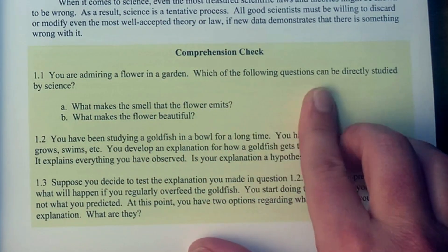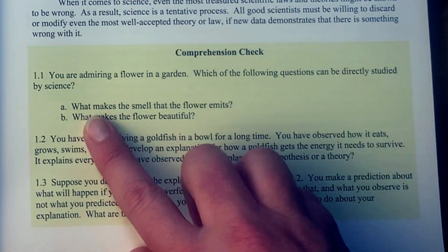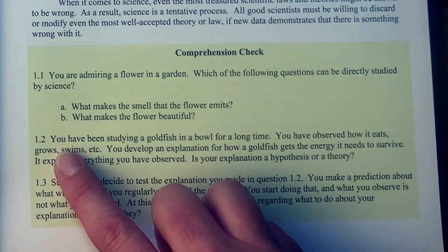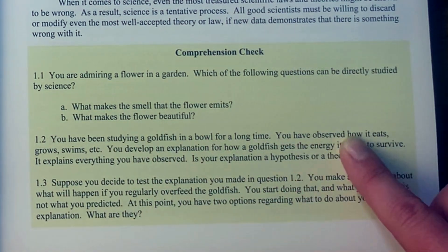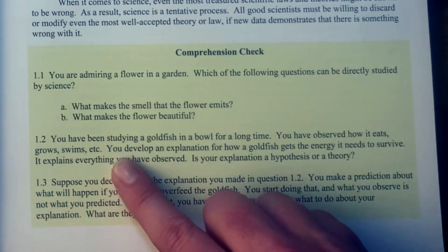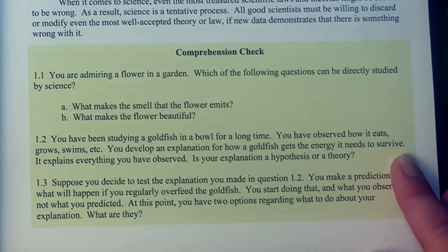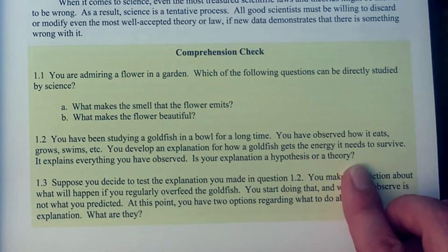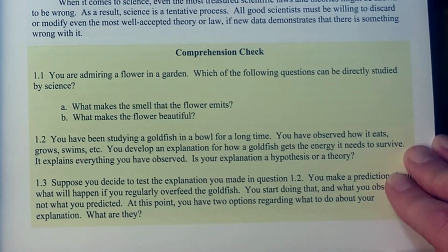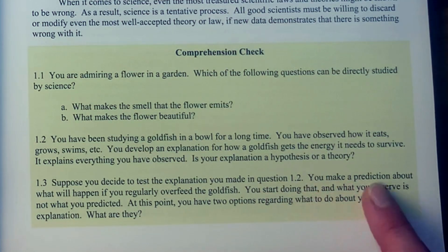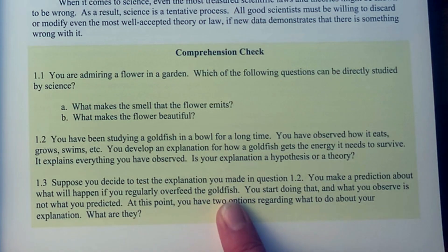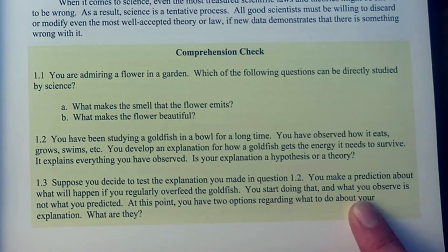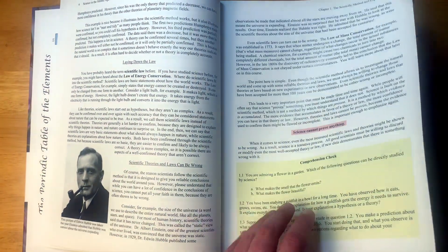So this is something that would be in that PDF download that you could get for free or your child would answer it in their notebook. You're admiring a flower in a garden. Which of the following questions can be directly studied by science? What makes the smell that the flower emits or what makes the flower beautiful? So which of these could you study by science? You have been studying a goldfish in a bowl for a long time. You have observed how it eats, grows, swims, etc. You develop an explanation for how a goldfish gets the energy it needs to survive. It explains everything you have observed. Is your explanation a hypothesis or a theory? And then 1.3. Suppose you decide to test the explanation that you made in question 1.2. You make a prediction about what will happen if you regularly overfeed the goldfish. You start doing that and what you observe is not what you predicted. At this point you have two options regarding what to do about your explanation. What are they?